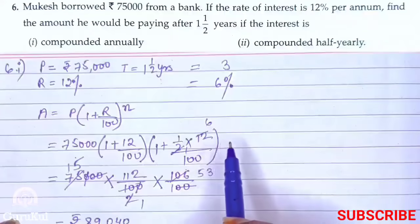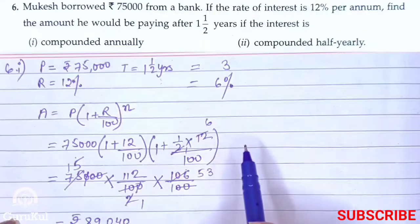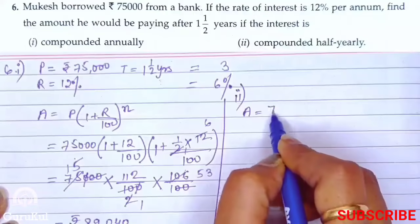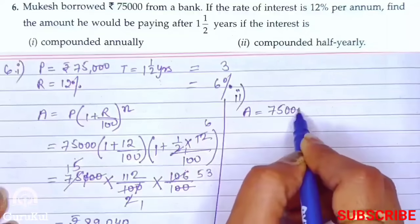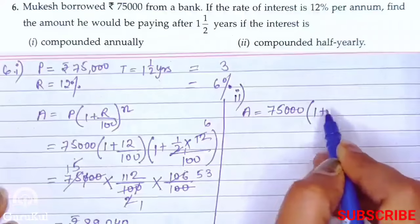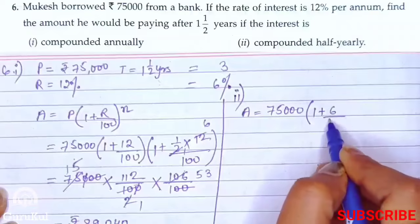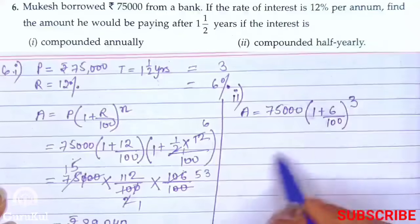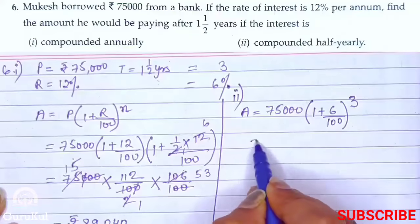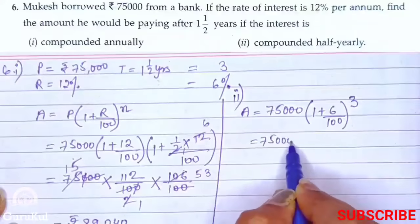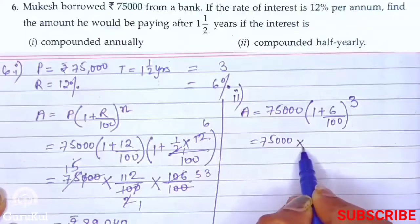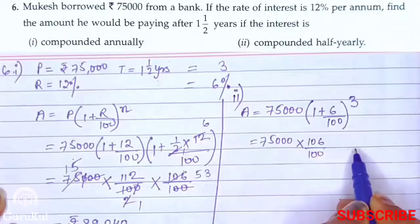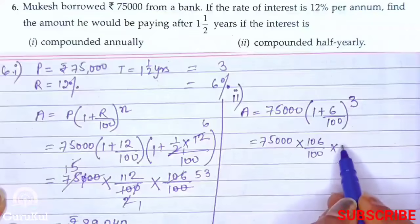For the second part of question 6: Amount = P × (1 + R/100)^N. Here rate is 6% and N is 3. So: Amount = 75,000 × (1 + 6/100)^3 = 75,000 × (106/100)^3. We need to multiply this three times because it is to the power 3.